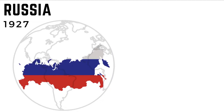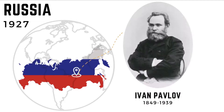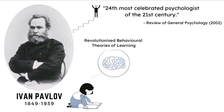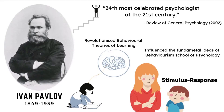The origins of classical conditioning can be traced back to 1927 Russia, more specifically to the works of a renowned Russian scientist named Ivan Pavlov. Born in 1849, Pavlov has been referred to as the 24th most celebrated psychologist of the 21st century. He significantly contributed to the development of the behavioural learning theories in psychology, and his contributions to classical conditioning reportedly inspired and influenced the fundamental ideas of the behaviourism school of psychology.